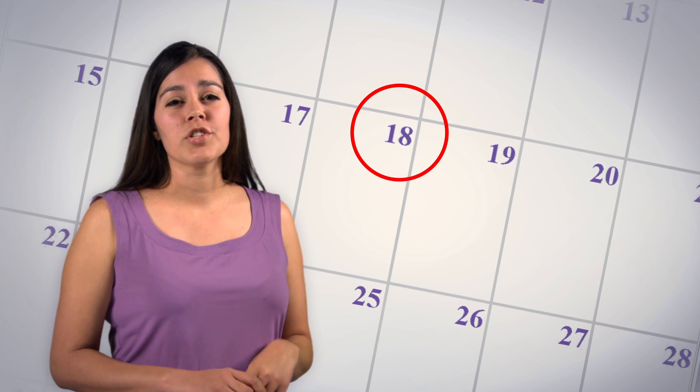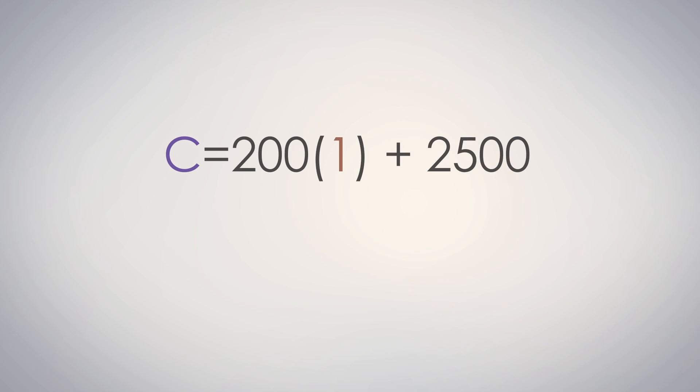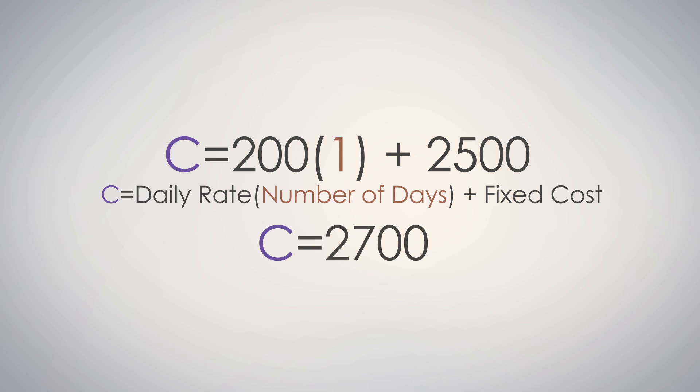Our linear function would read total cost equals the rate times the days plus the initial cost of the van. Let's check out how much it will cost to be on tour just one day. C equals 200 times 1 plus 2500. So C equals the daily rate times the number of days plus that fixed cost. Therefore, C would equal $2,700.